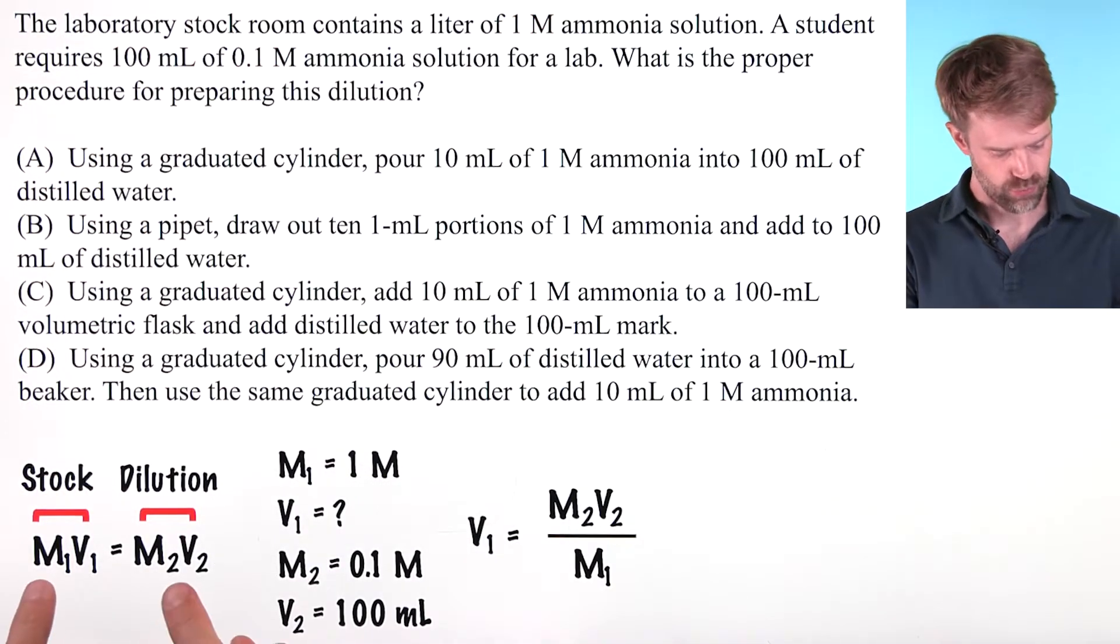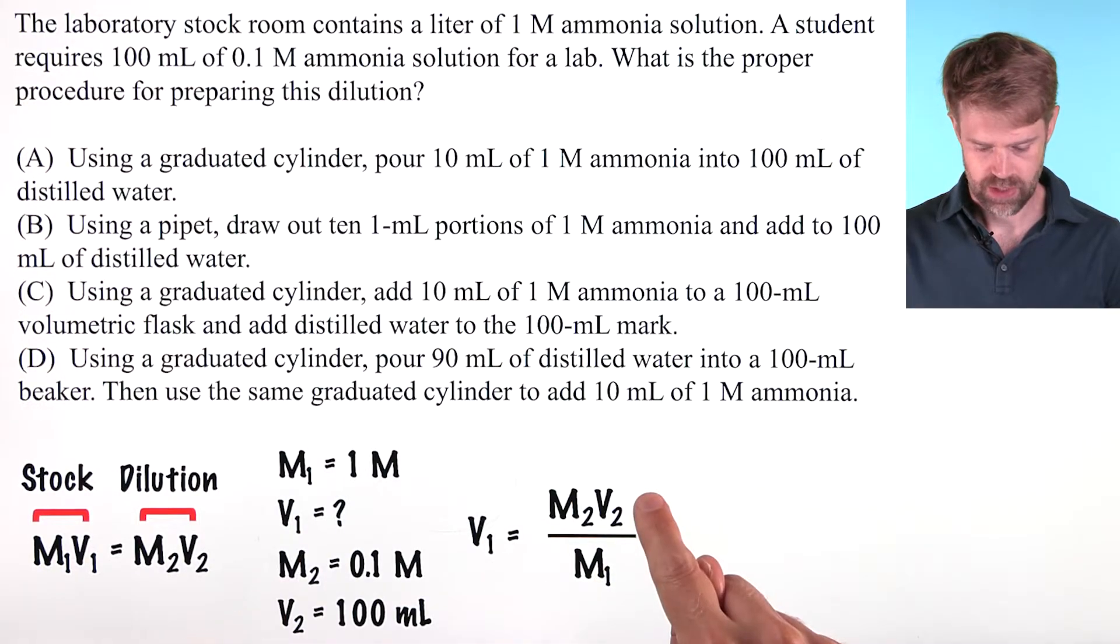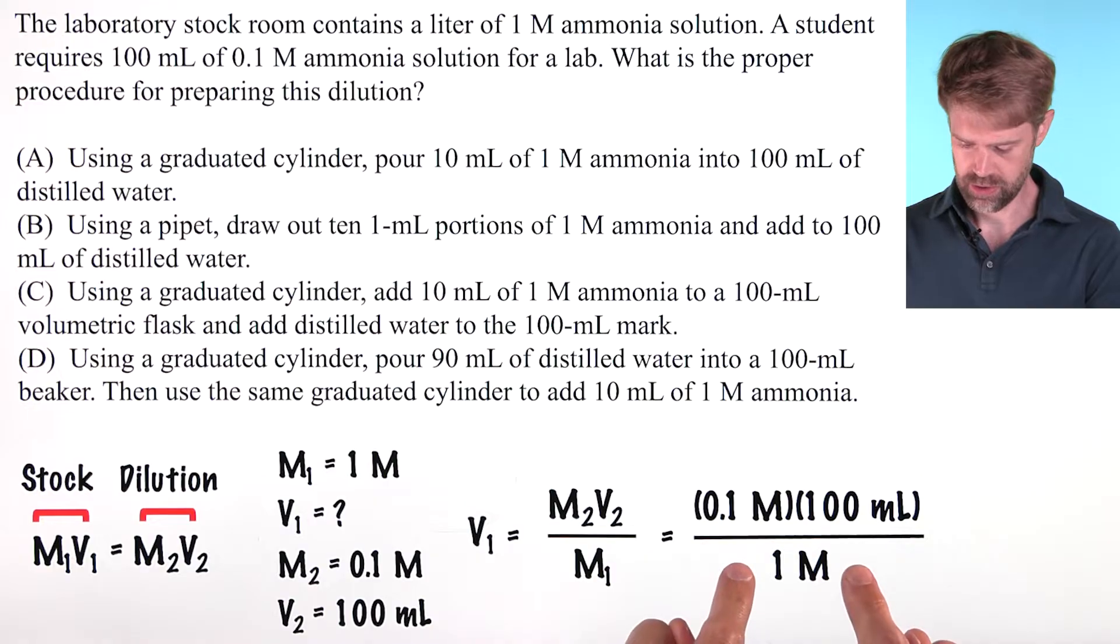Now we're going to rearrange this equation to solve for V1. There it is. Dividing both sides by M1 gives us M2 times V2 divided by M1. Now we can plug in our knowns.